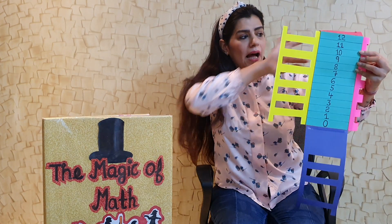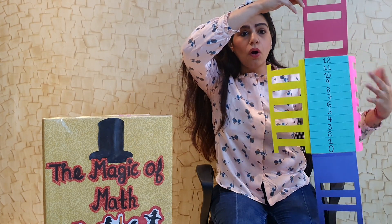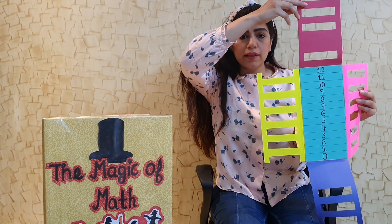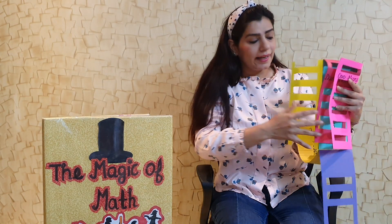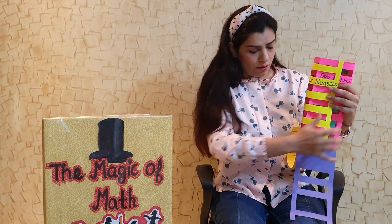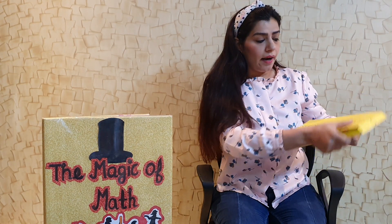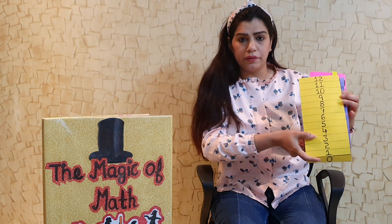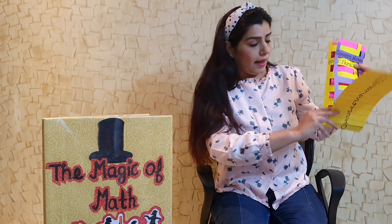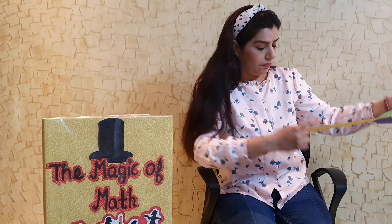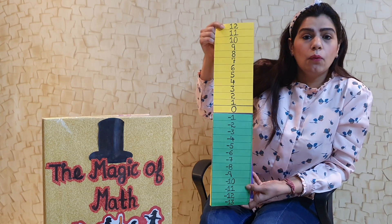Let me open all the flaps to show you. These are the four flaps used for even numbers, odd numbers, prime numbers, and composite numbers. Now I close all the flaps and take you to the back side, which again shows the whole numbers starting from zero.